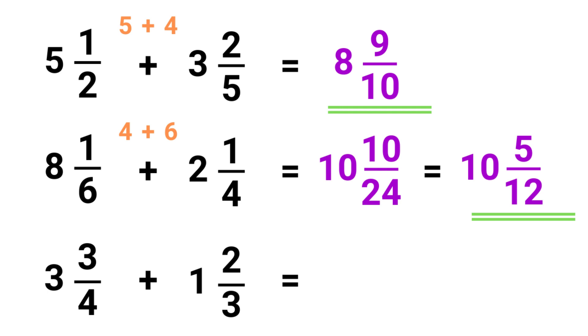Finally, we have 3 3/4 and 1 2/3. To get the denominator, first we get 4 times 3 equals 12. Then cross multiply. 3 times 3 equals 9, and then 4 times 2 equals 8. We add this together, so 9 plus 8 is 17.